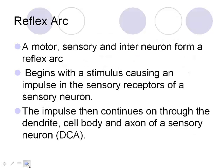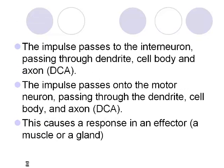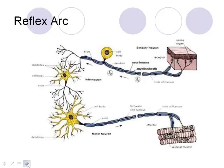To summarize the reflex arc: it begins with a stimulus in the sensory neuron. The impulse flows through the dendrite, cell body, and axon into the interneuron — again dendrite, cell body, axon — which interprets the message, then out through the motor neuron's dendrite, cell body, and axon, triggering an effector: either a muscle contraction or a gland secreting a hormone.